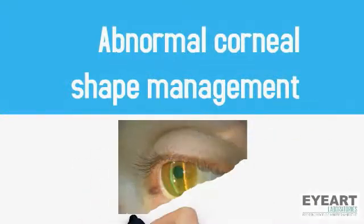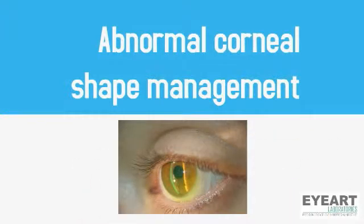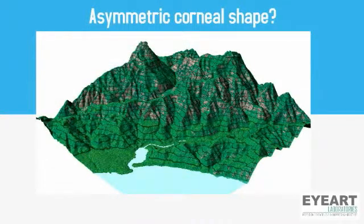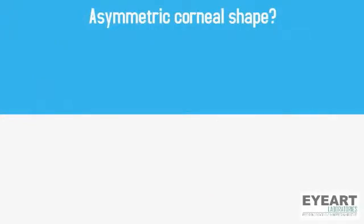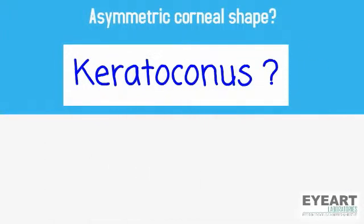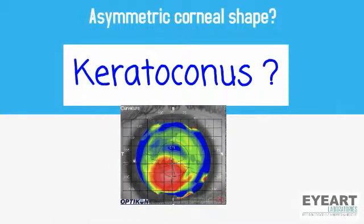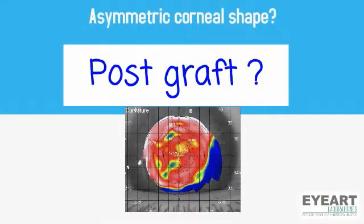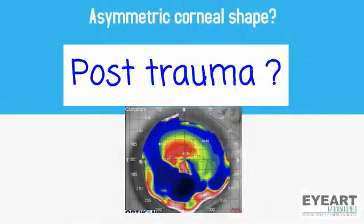Let's talk about abnormal corneal shape and how it can be corrected. Asymmetric corneal shape could be of any kind. Topography may result in any predictable or not predictable shape, starting from a toric cornea to a moderate keratoconus, or an elevated post graft after keratoplasty, or even an unpredictable topography after corneal trauma.